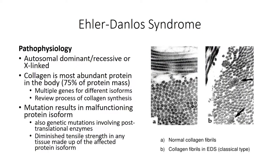In addition to the two most common forms of EDS, another 11 subtypes are also presently identified, including vascular EDS and kyphoscoliosis EDS. It is likely that the classification system will continue to adapt as more variants are discovered and more genetic causes are identified.